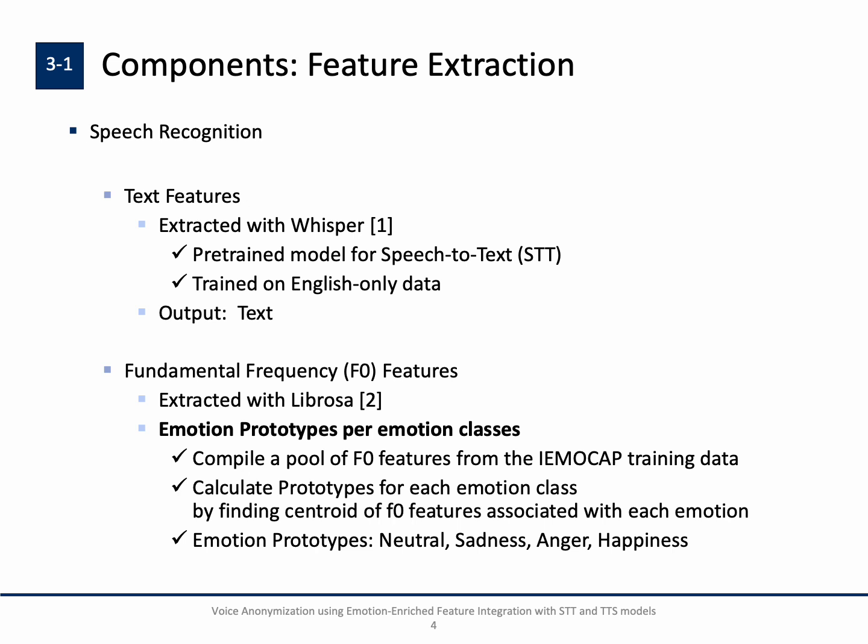After extracting F0 features, we calculate prototypes representing each emotion. We compile a pool of F0 features from the IEMOCAP training data, which includes four emotion classes as outlined in the Voice Privacy system. We then calculate prototypes for each emotion class by finding the center of standardized F0 features associated with each emotion. We obtain emotion prototypes representing four emotions: neutral, sadness, anger, and happiness. These are integrated with the F0 features using an attention-based mechanism.